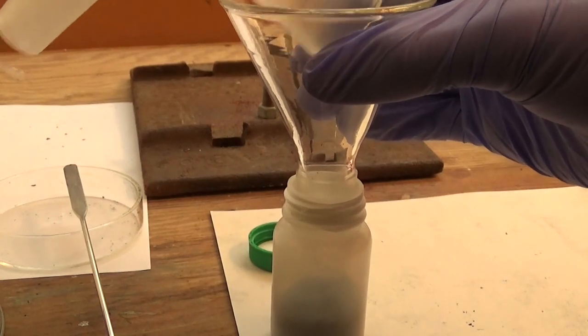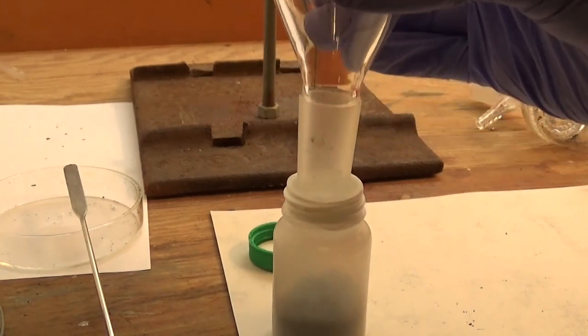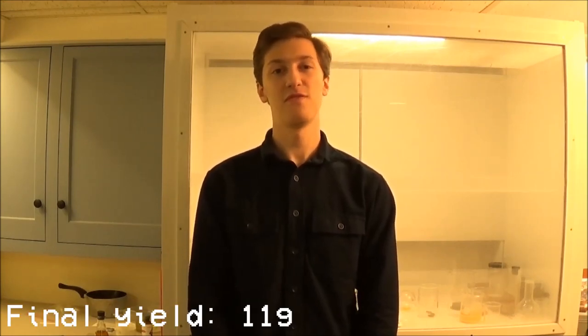After drying, the palladium on carbon was free flowing and could be transferred to a bottle for storage. In the end, I got around 11 grams of approximately 5% palladium on carbon. If you were to buy it, this amount would probably cost you over $100, and I was able to make it for around $25.